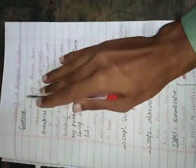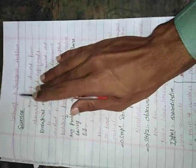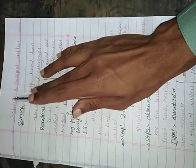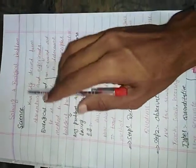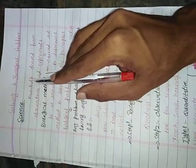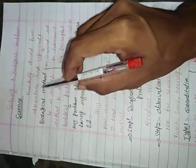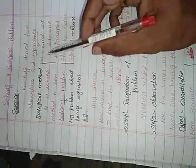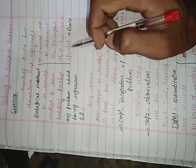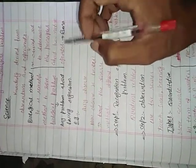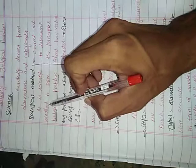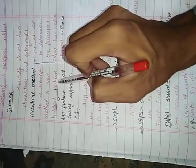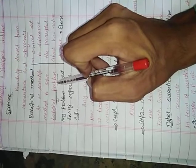Bismillahirrahmanirrahim, Assalamu Alaikum. Today we will start chapter number two of ninth class: Solving a Biological Problem. What is science? Science is the knowledge derived from observations and experiments. Experiments are carried out to determine the principles about how nature operates. Biological method is a scientific method to solve a biological problem.